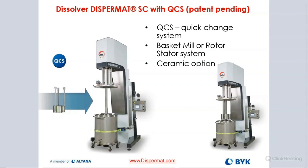Here is a slide about the quick change system. You can go from a dissolver to a basket mill and back in under five minutes. You can also add a rotor stator instead of the basket mill, turning the machine into a very efficient homogenizer or emulsifier.